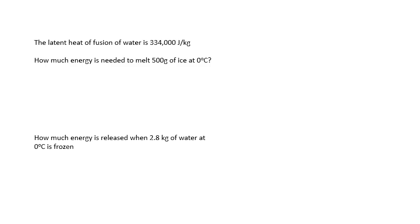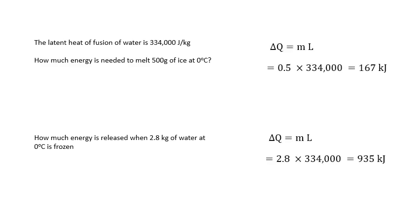Here's a couple of examples. The first one is melting ice, so we're talking latent heat of fusion here. And the second one is freezing water, so again, latent heat of fusion. It's to do with the change of state. Delta Q equals ML. Remember, the mass has to be in kilograms. So 0.5 times whatever is 167 kilojoules, 2.8 times is 935 kilojoules. So for a change of state at a constant temperature, delta Q equals ML.